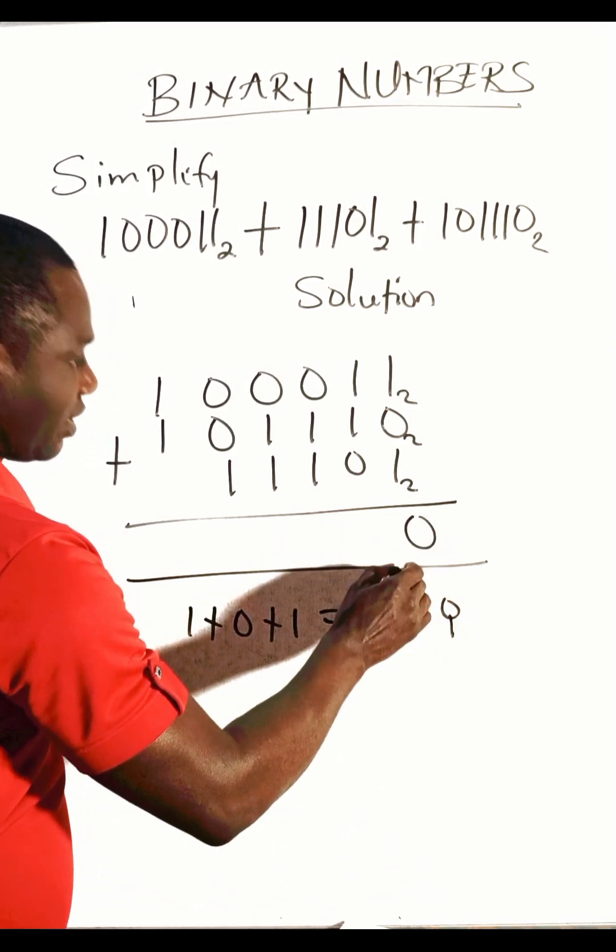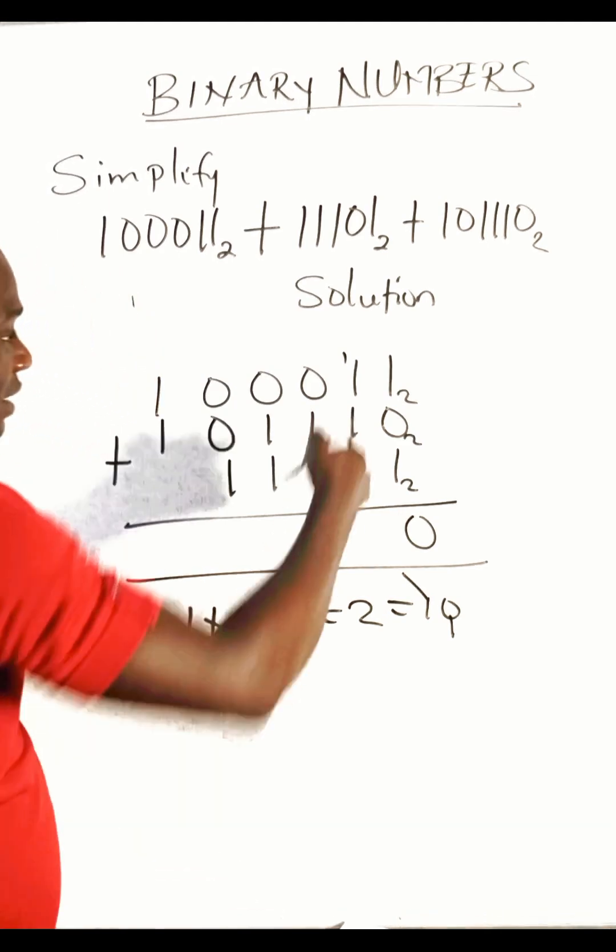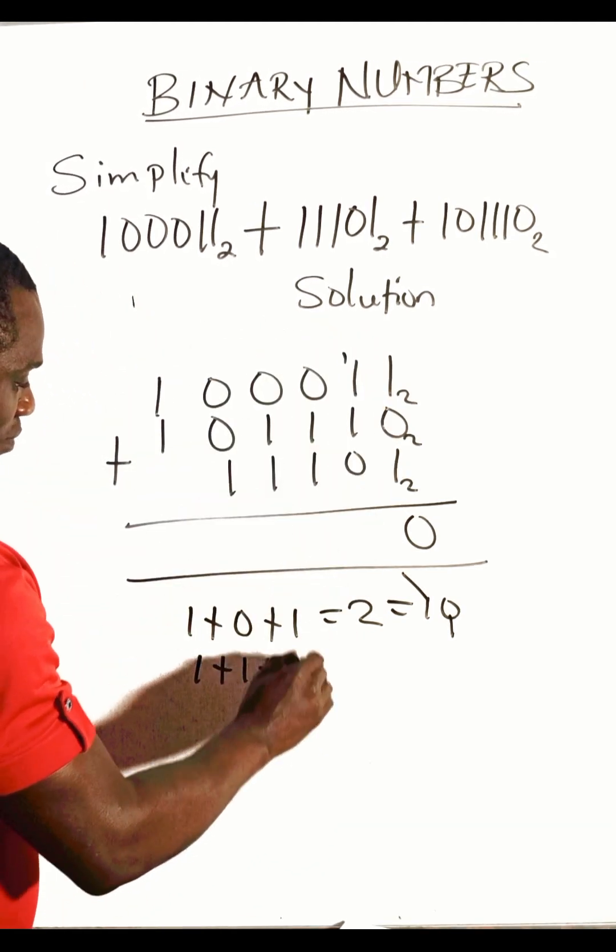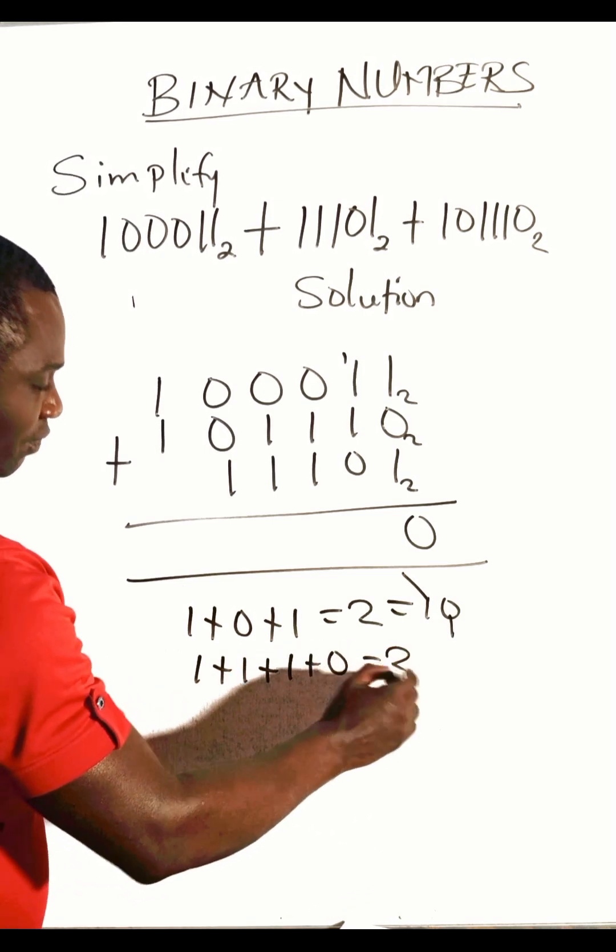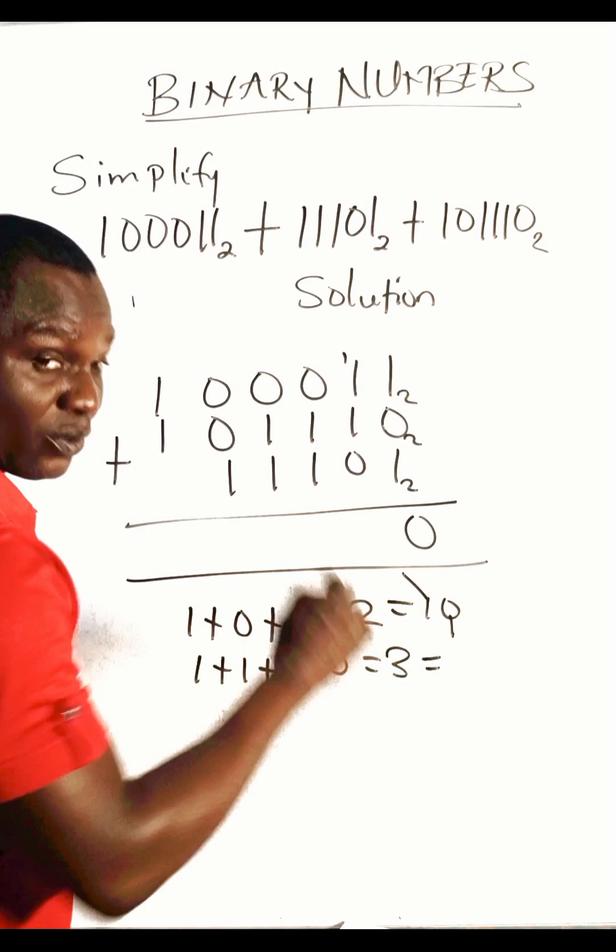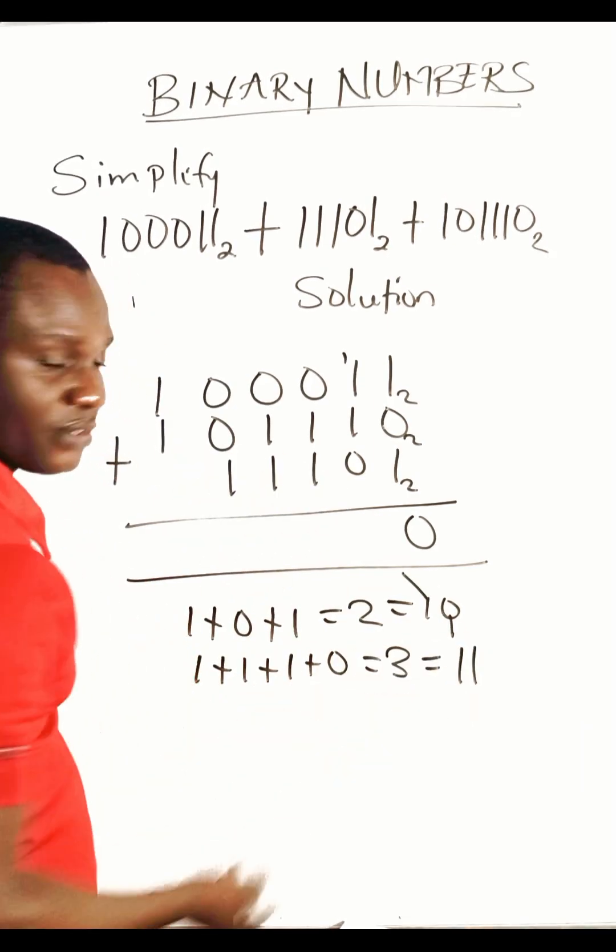Then let's add this also. One plus one plus one plus zero, this gives us three. Three in binary is eleven, so we write down this one, carry this.